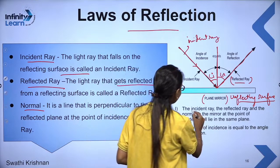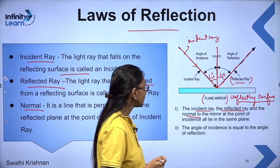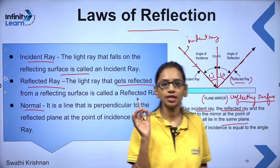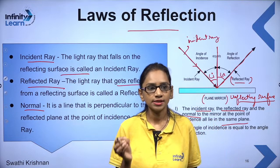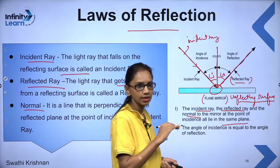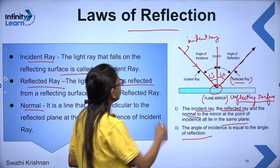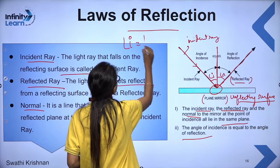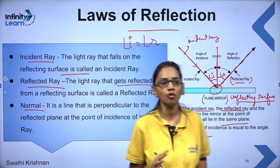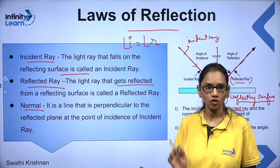The laws of reflection are: first, the incident ray, reflected ray, and the normal to the mirror at the point of incidence all lie on the same plane. Second, the angle of incidence i is equal to the angle of reflection r. These are the two laws of reflection.